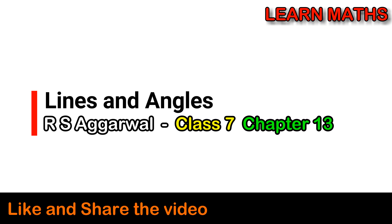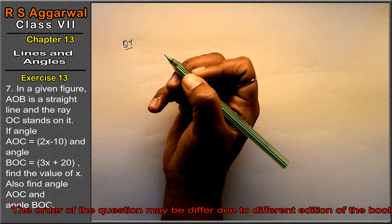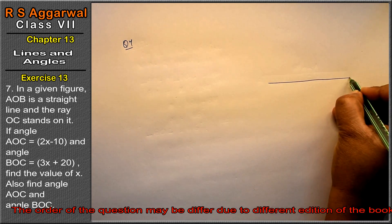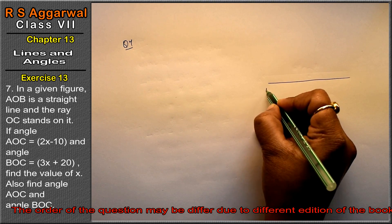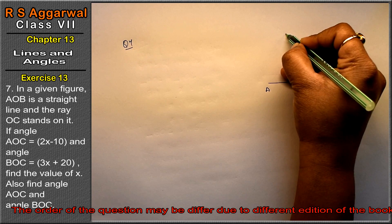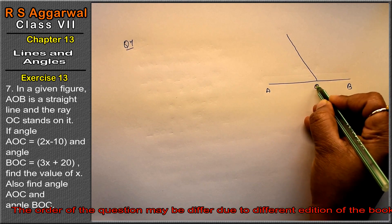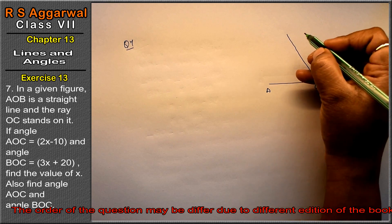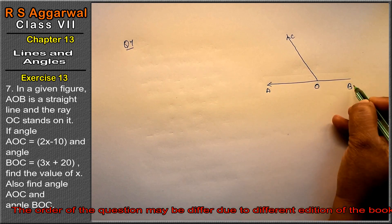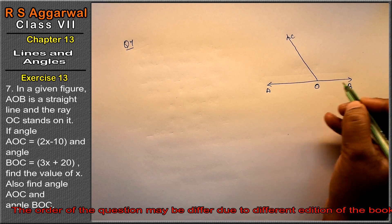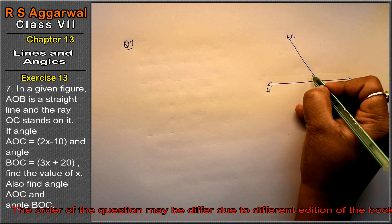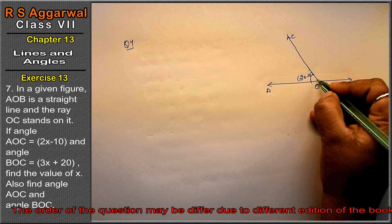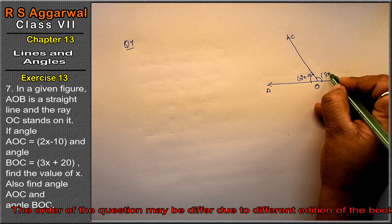Let's do question number 7 of Exercise 13, Lines and Angles. Question number 7 is: In a given figure, AOB is a straight line. We have the figure where line AB passes through point O. AOB is a straight line and the ray OC stands on it. This is OC and this is AOB. Now AOC equals 2x minus 10 degrees and BOC equals 3x plus 20 degrees.